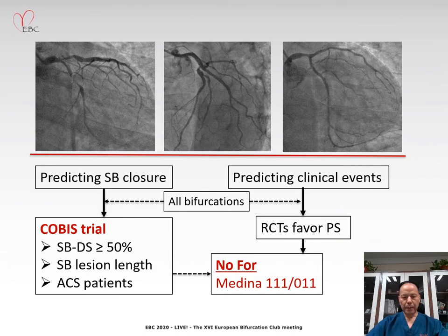Previously published randomized trials favor provisional stenting technique or various two-stent techniques for the entire cohort of bifurcation lesions. However, so far there is no risk stratification for the prediction of worse clinical results specifically for Medina 111 or 011 coronary bifurcation lesions.